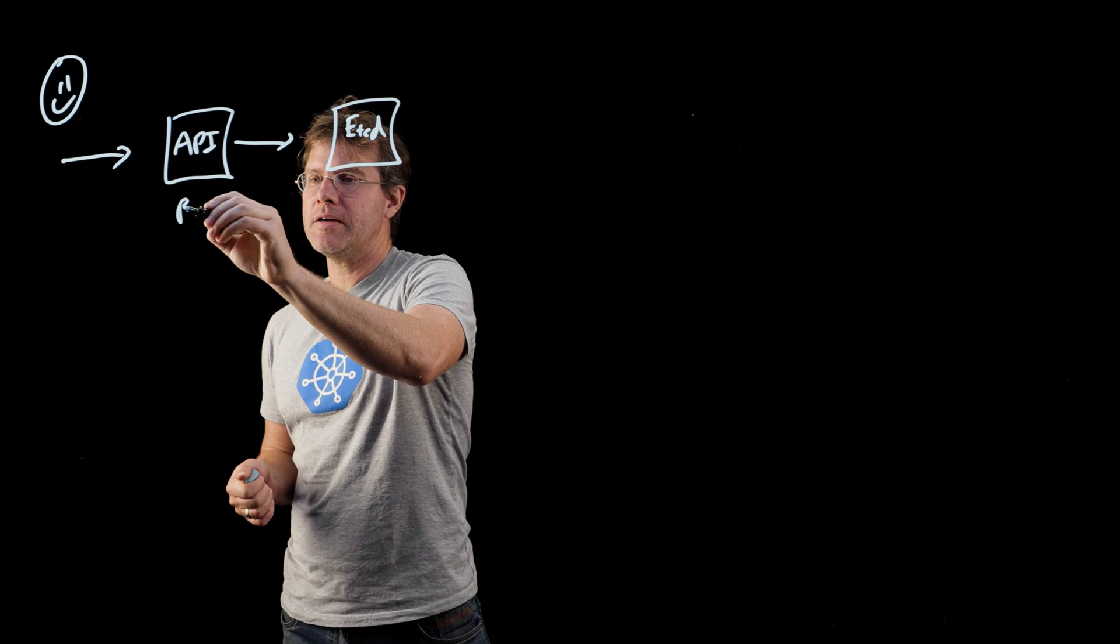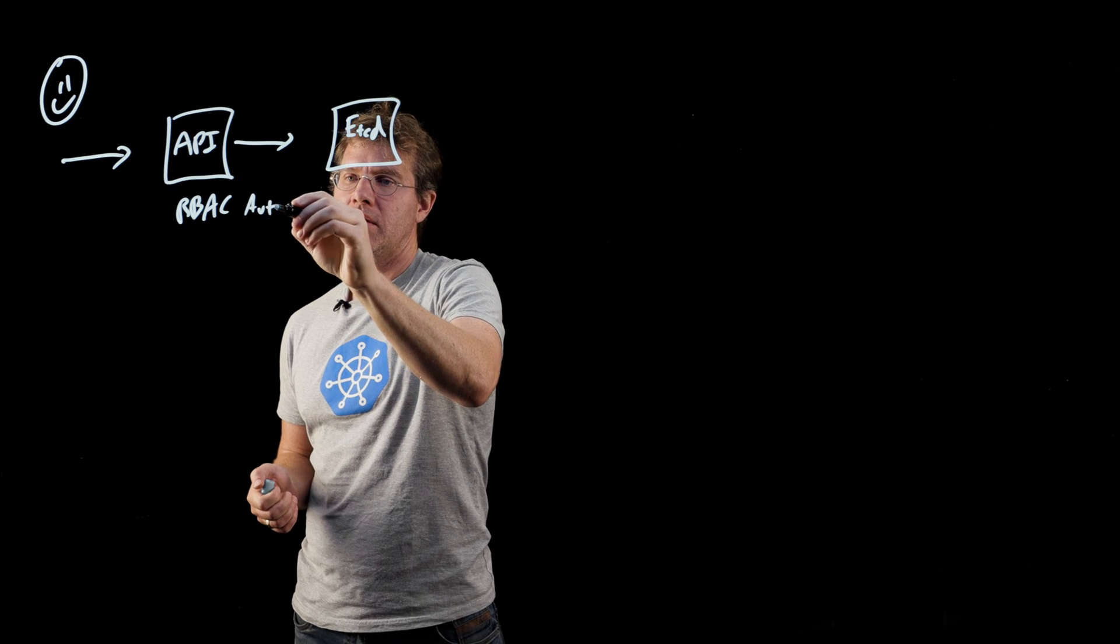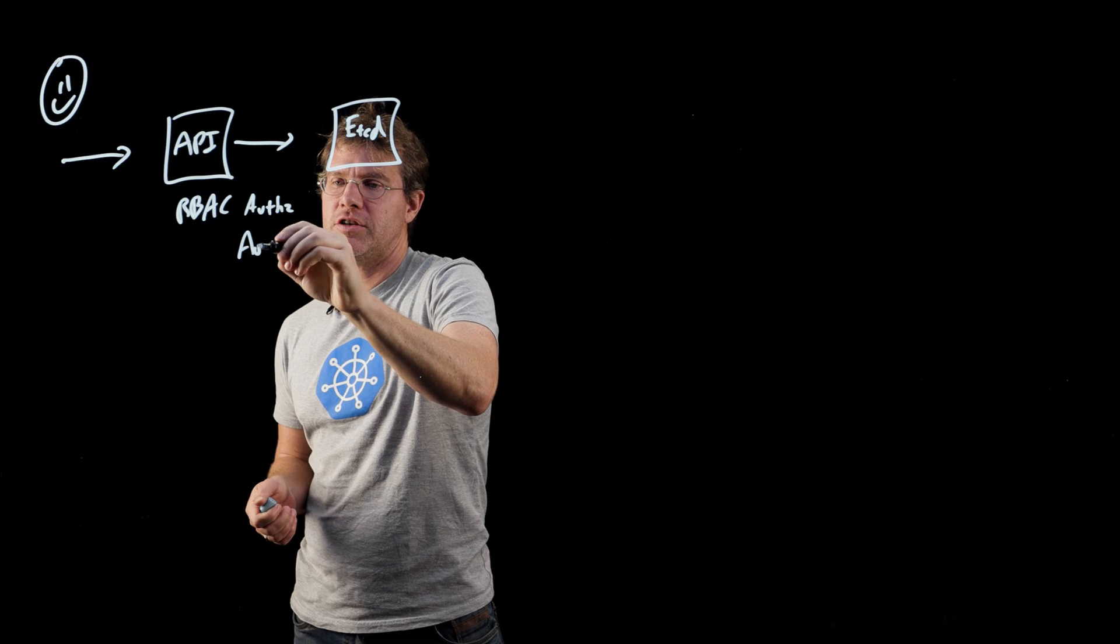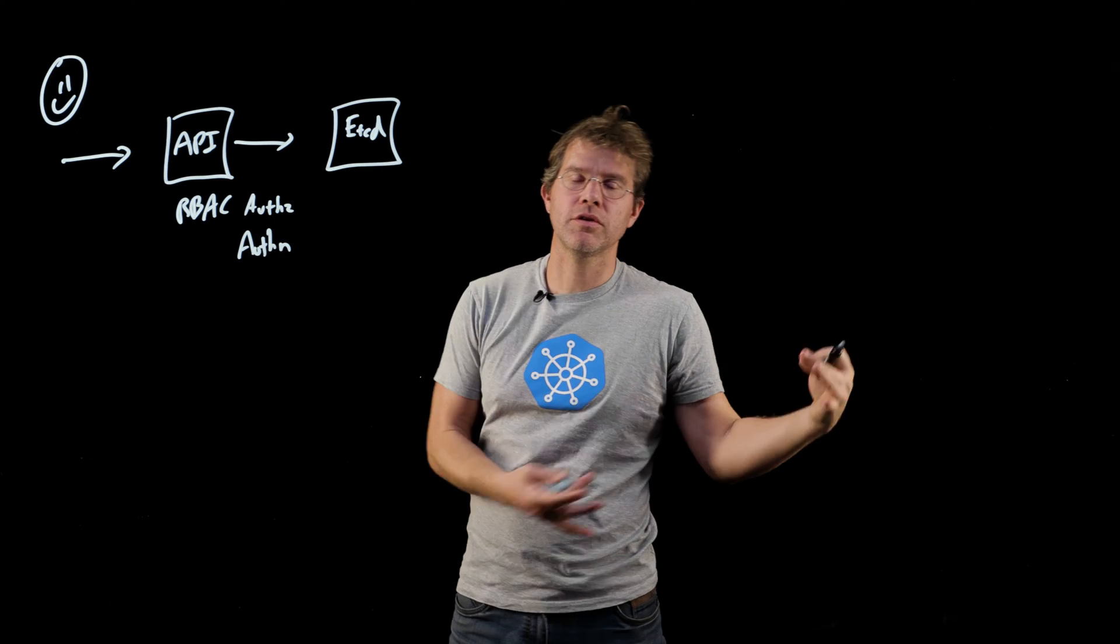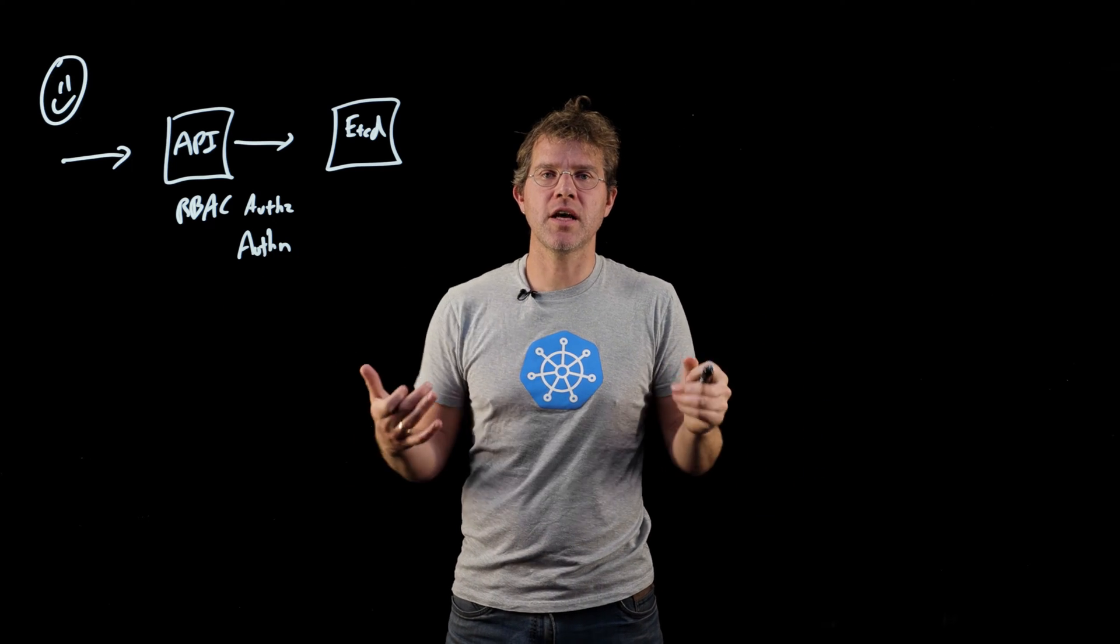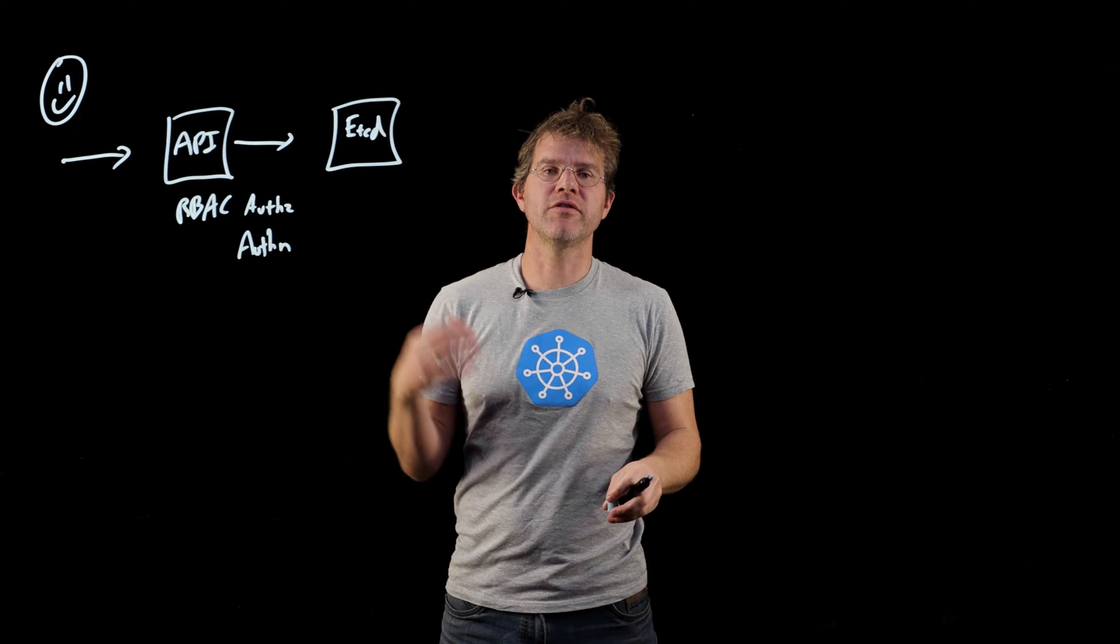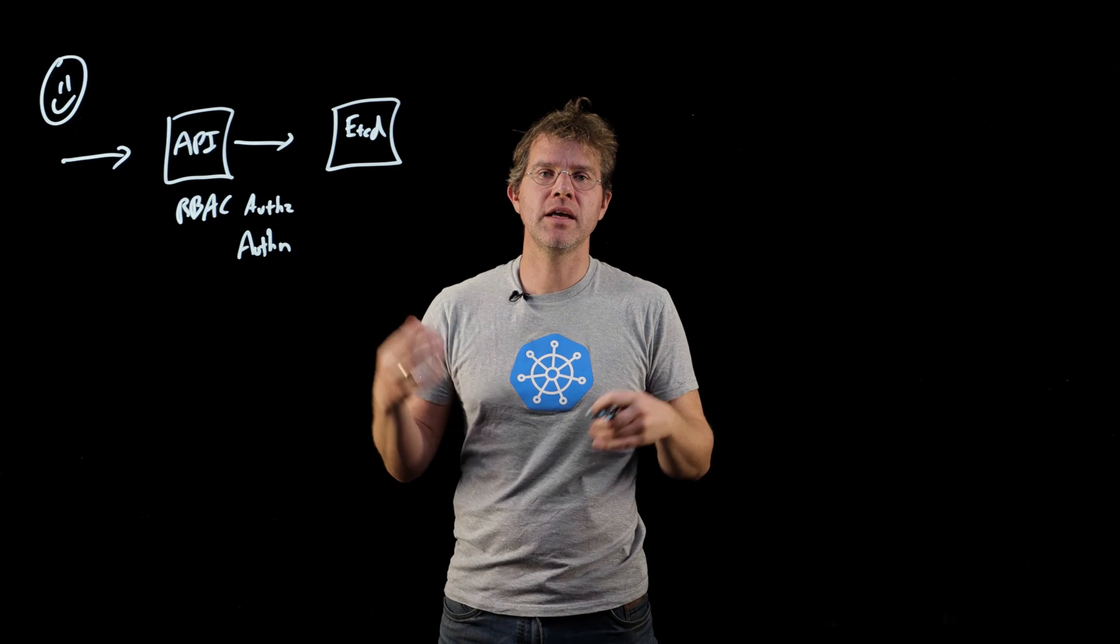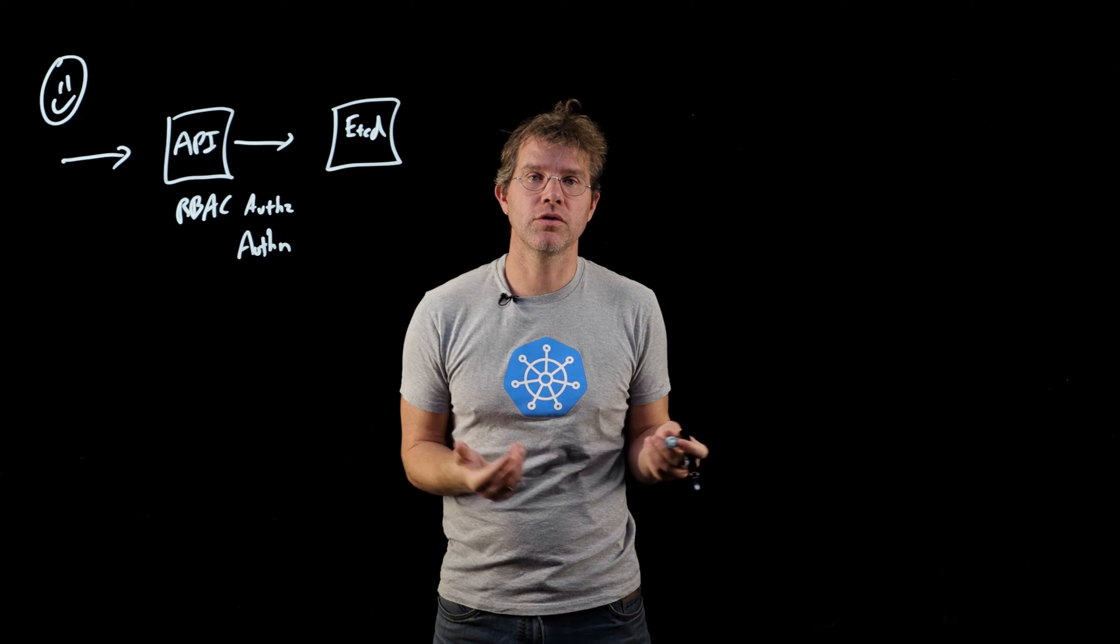Now, inside of the API server itself, there is code that does RBAC for authorization, and it also does authentication. So that allows you to say, hey, this user can or can't do certain things within the cluster. But there's a lot of stuff that you might want to do that involves either modifying or validating an API object that looks within the API object itself in order to make decisions or even make modifications, and that's where admission controllers come in.